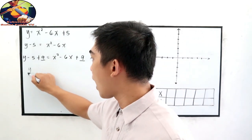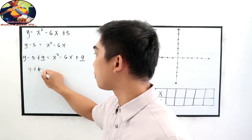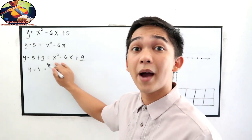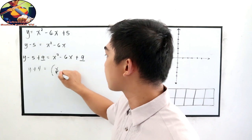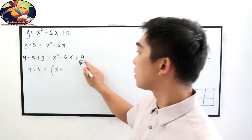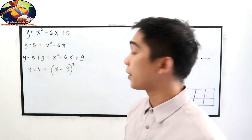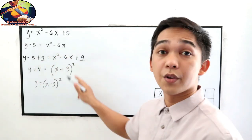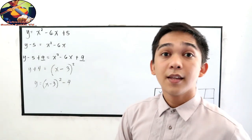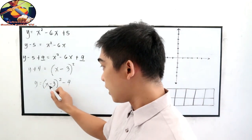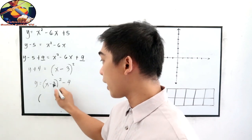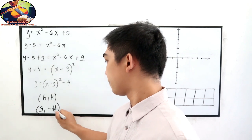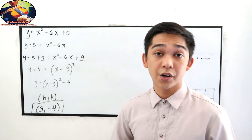Now simplify: y minus 5 plus 9 gives y plus 4, is equal to a perfect square trinomial. We can write this as the square of a binomial — take the sign of the middle term, minus, then the square root of the constant term, 3, then square. Our vertex form is y equals x minus 3, squared, minus 4. Our vertex is (h, k), where h equals 3 and k equals negative 4. This is our vertex, or the turning point of the parabola.